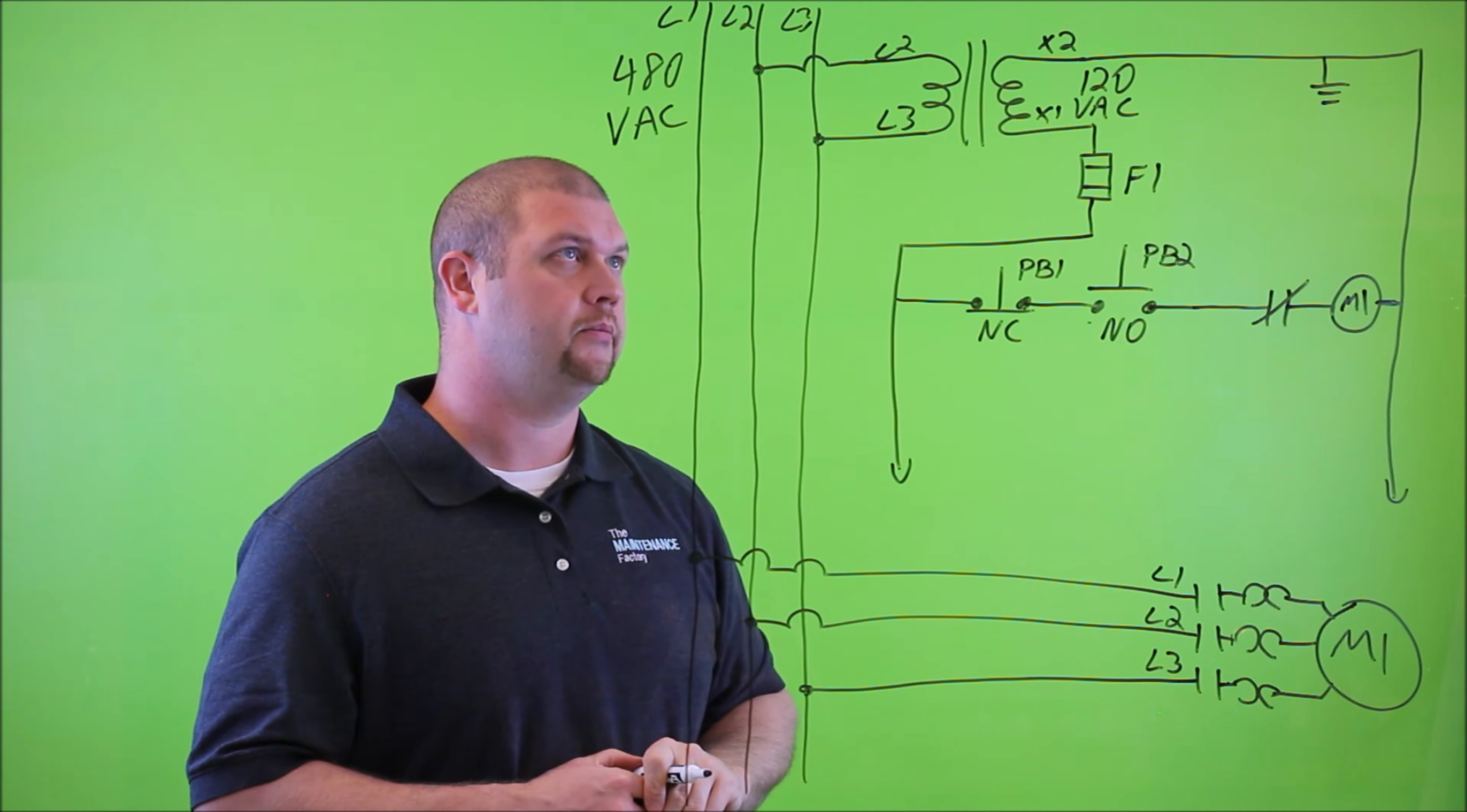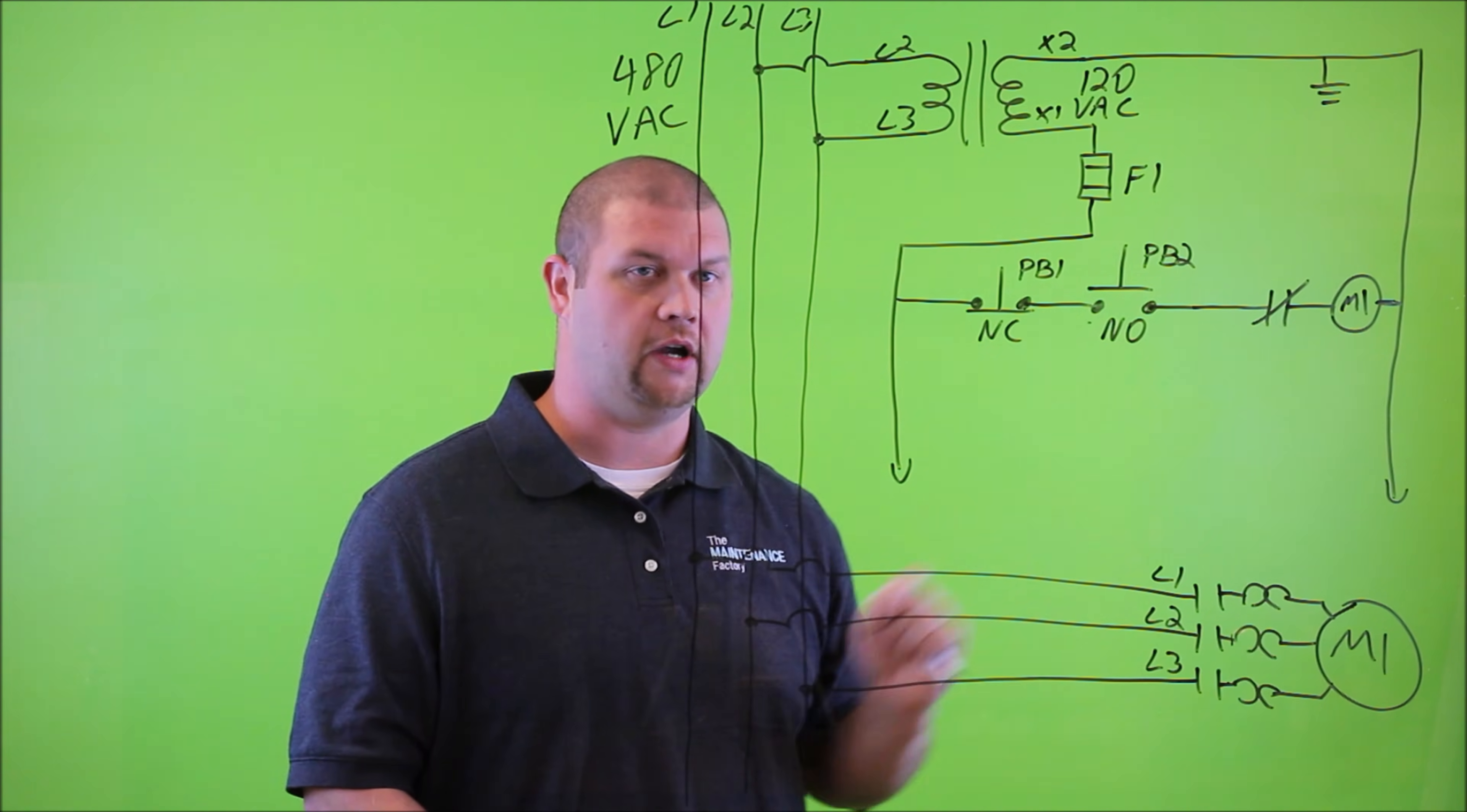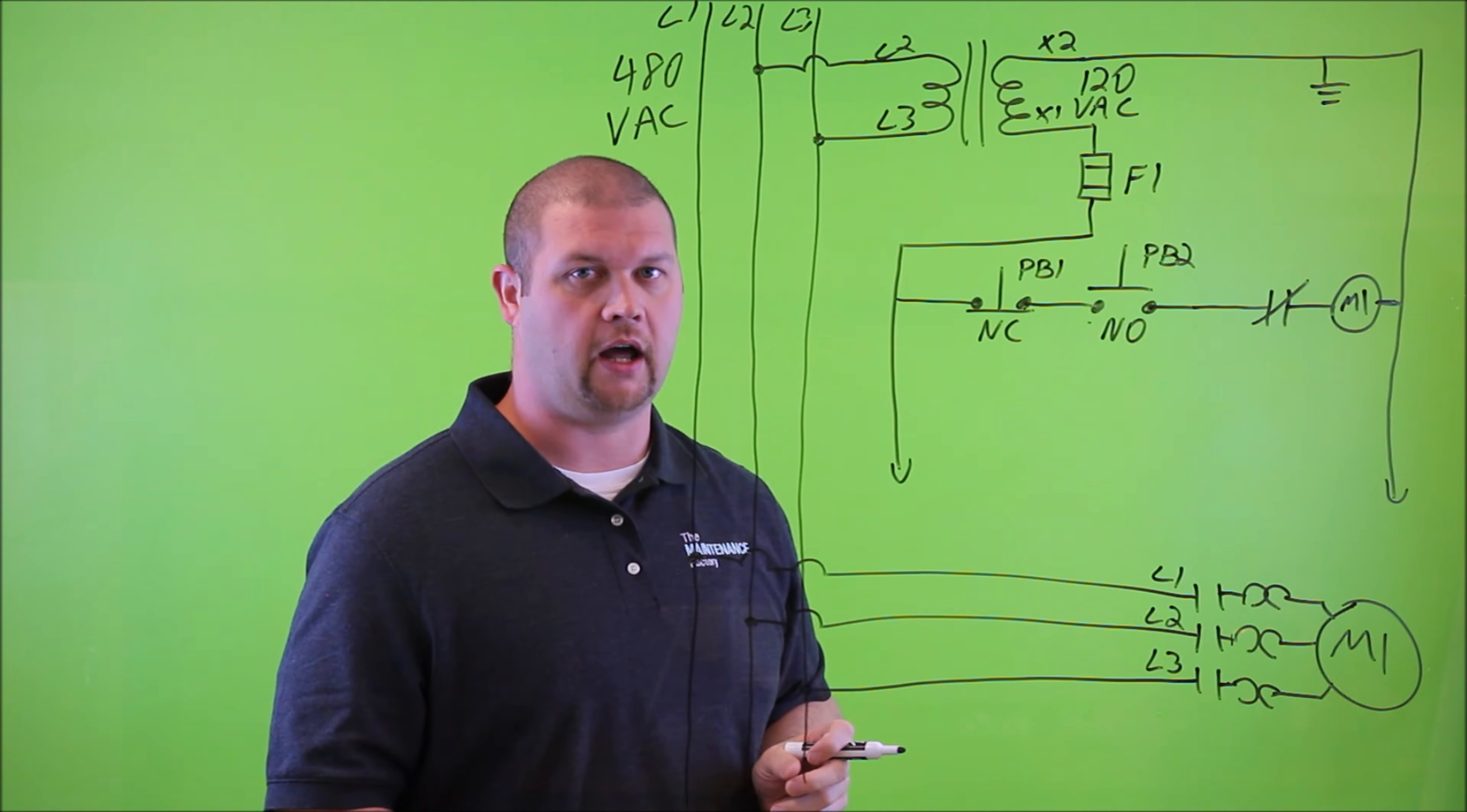Now, before we go any further, because there's one very important piece of information left out, I want to review what we have and walk through the steps on how this circuit would work in its current state. So, once again, we have our three phases of power coming in, 480 volts AC. It's three phases, and we know that because there's three lines. Each line is connected to the line side of the contactor, labeled L1, L2, and L3. The contactor has another device attached to it called an overload protection device. And then we have the motor.